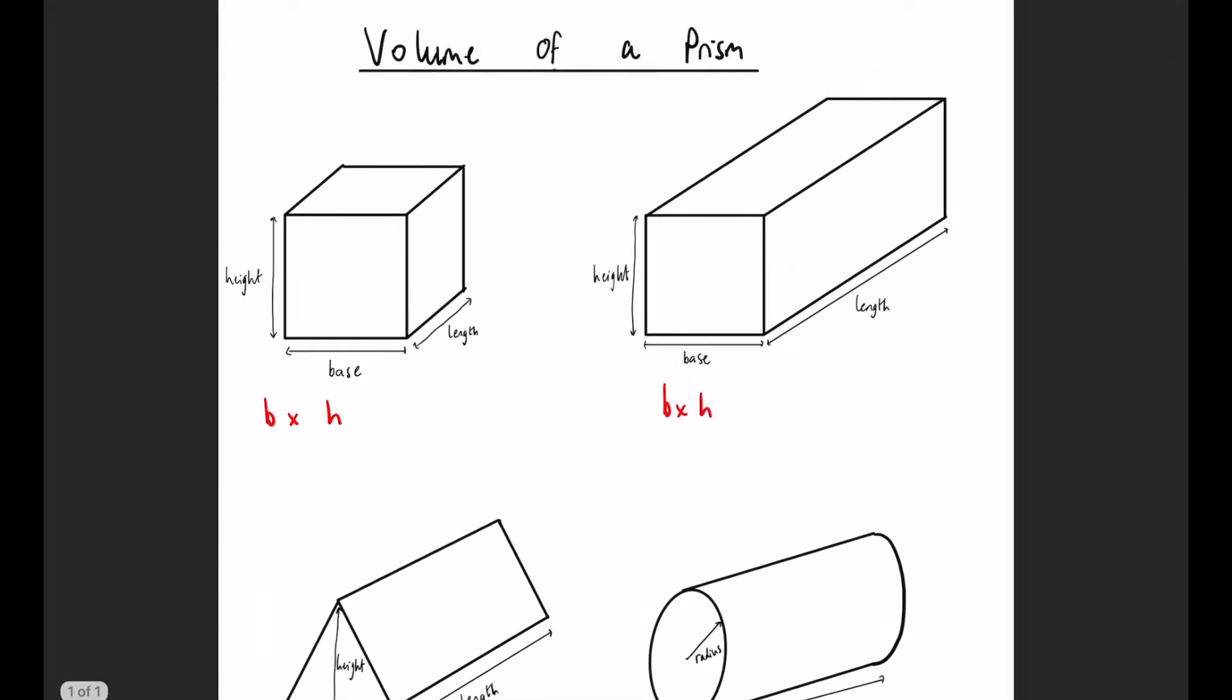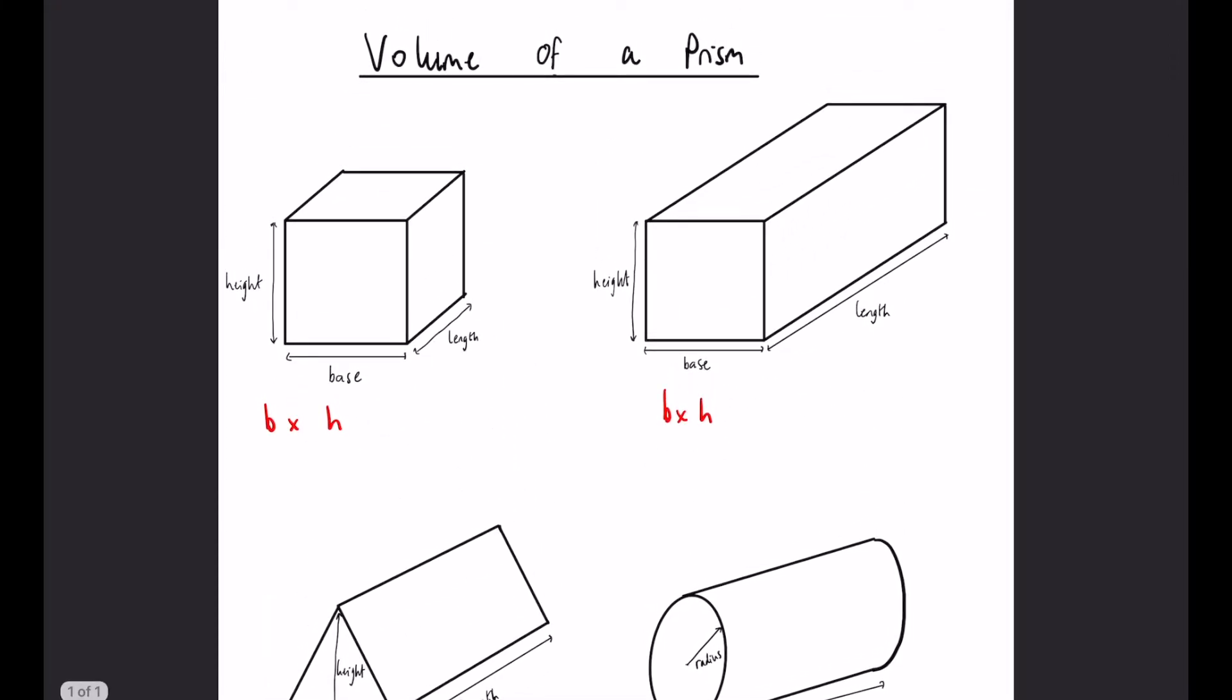If we go back to all of these, as we said before, a prism is just a 2D shape that has been stretched backwards.